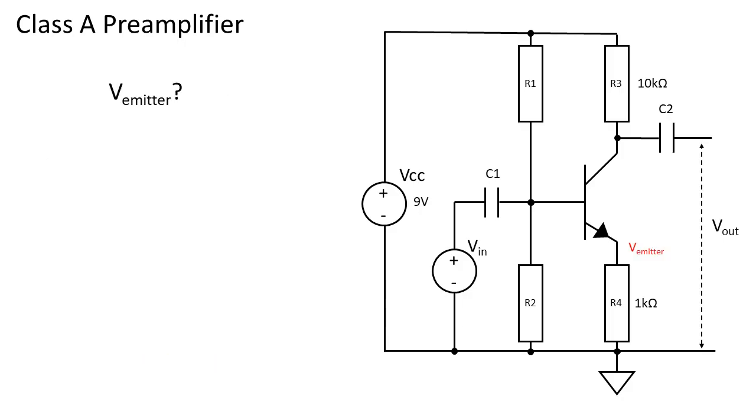Now we know IQ we can calculate the voltage drop across R4. This is simply IQ times R4 equals 409 microamps times 1k ohms equals 409 millivolts.